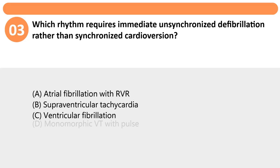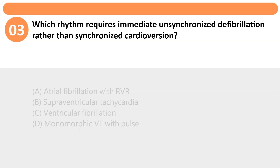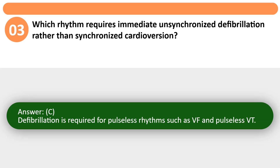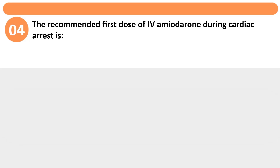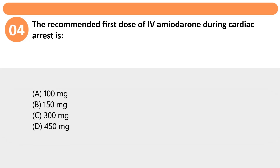Which rhythm requires immediate unsynchronized defibrillation rather than synchronized cardioversion? A. Atrial fibrillation with RVR. B. Supraventricular tachycardia. C. Ventricular fibrillation. D. Monomorphic VT with pulse. Answer: C. Defibrillation is required for pulseless rhythms such as VF and pulseless VT.